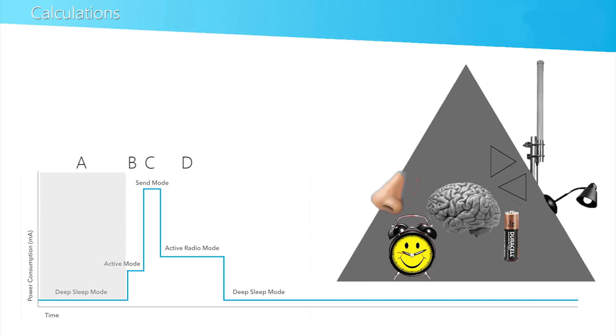A point to note here is the overall efficiency of the supply and the current consumed by the regulator and that of the attached sleeping device. Either way, the device is caused to wake up into B, the active mode, which causes an increase in the current consumption.